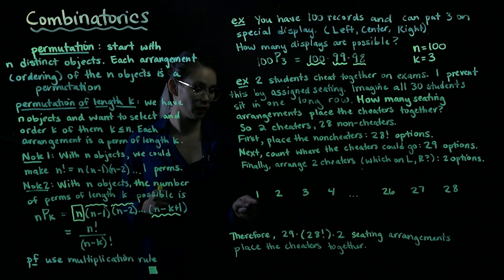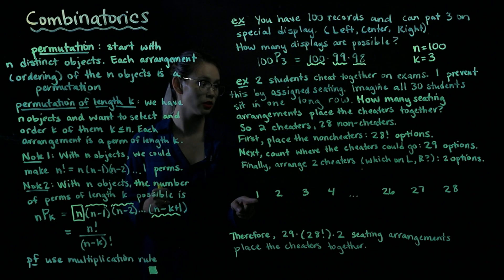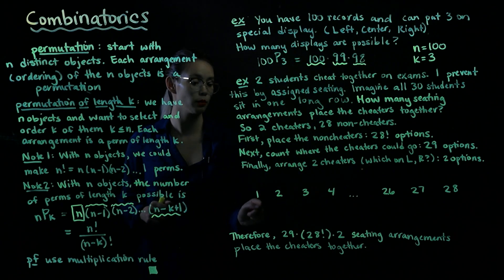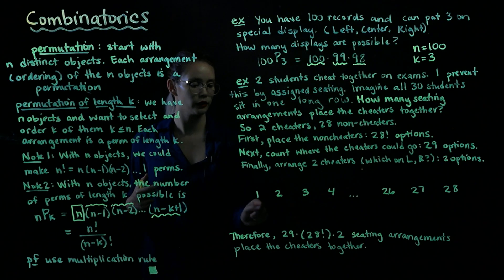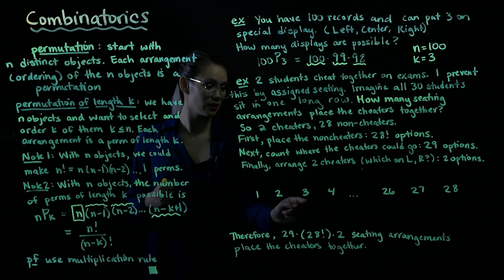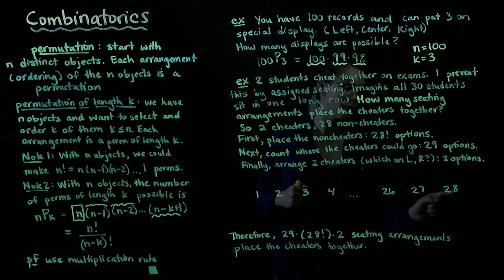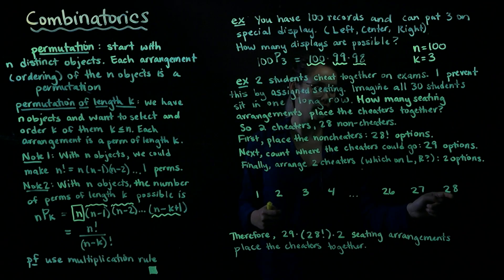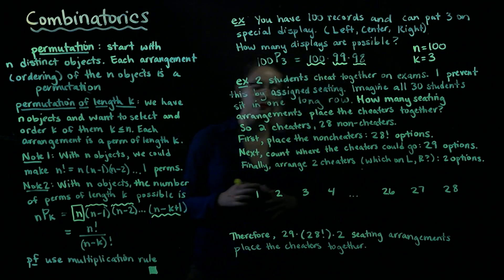For this spot there are 28 options, 28 of these non-cheaters. Since I haven't placed any of the students yet, here in this first one we have 28 options. Then we have 27, 26, 25, all the way until we get to the very last spot. There's only one non-cheater left, so there's only one option here.